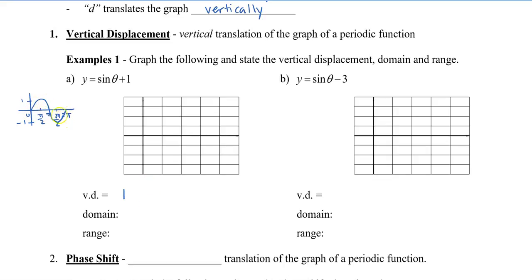The whole graph has now shifted up by 1. So instead of starting at 0, we're now going to graph it starting at 1. When I see a vertical displacement, I draw that central axis to help guide me where the rest of the points will go. I'm going to draw the central axis at 1, graph the first point at (0, 1), the last point at (2π, 1), and the middle point at (π, 1), because all three of these points are on the central axis.